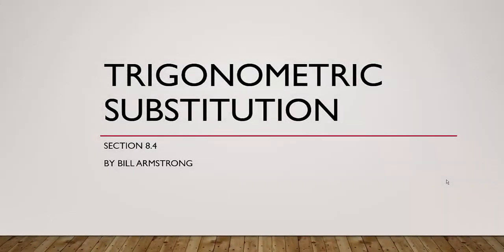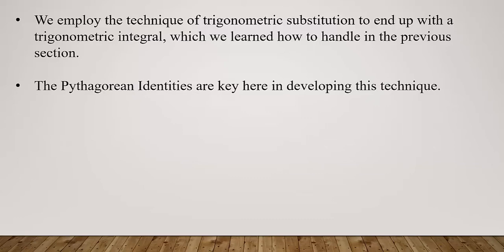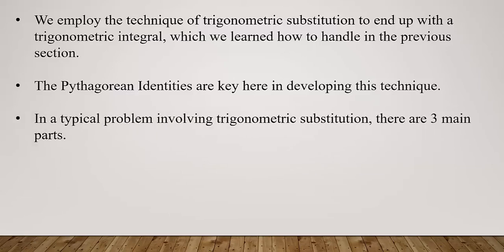Continuing our voyage into integration techniques, next up is trigonometric substitution. We employ this technique to end up with a trigonometric integral, and we learned in the previous section how to attack a trigonometric integral. The Pythagorean identities are going to be key in helping us develop the technique known as trigonometric substitution. In a typical problem involving trigonometric substitution, there are three main parts.